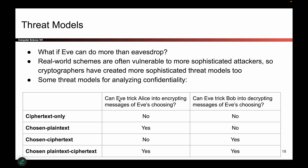Let's think about Eve the eavesdropper and possibly giving her extra powers. The two extra powers we can give Eve are: one, can Eve trick Alice into encrypting messages that she chooses? For example, can Eve get Alice to encrypt the word 'potato' using Alice's key? If so, Eve has that ability. And on the other side, can Eve trick Bob into decrypting messages — handing Bob a sequence of ones and zeros and asking him to decrypt it? If so, Eve has the second power.